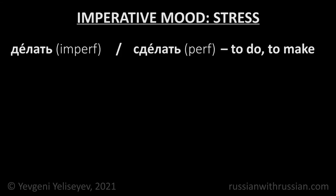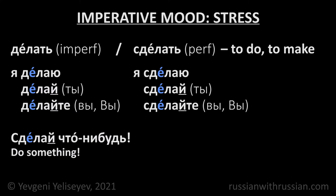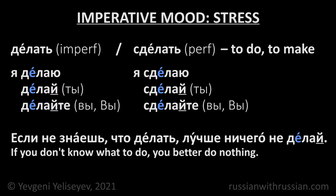Делать / Сделать — To do / To make. Я делаю, я сделаю — the forms Делаю, Сделаю are stressed on the stem, so the ending is unstressed. After vowels, the unstressed И becomes Й. Therefore the correct imperative forms are Делай, Делайте or Сделай, Сделайте. Сделай что-нибудь — Do something. Если не знаешь, что делать, лучше ничего не делай — If you don't know what to do, you better do nothing.